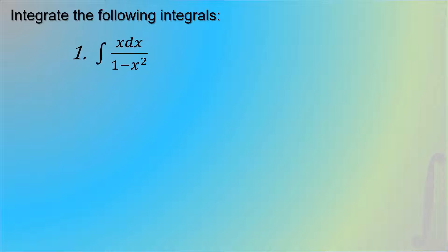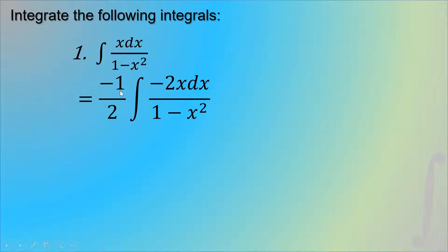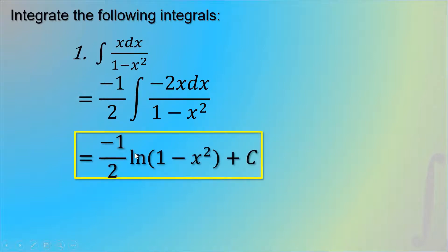For our first example, we are going to integrate the integral of x dx over 1 minus x squared. First, we differentiate our denominator, which gives negative 2x dx. Our numerator lacks negative 2, so we balance it by placing negative one-half outside the integral sign. That gives negative one-half times the integral of negative 2x dx over 1 minus x squared. Since our differential matches the differential of our denominator, we use the natural logarithm: negative one-half ln of (1 minus x squared) plus C.